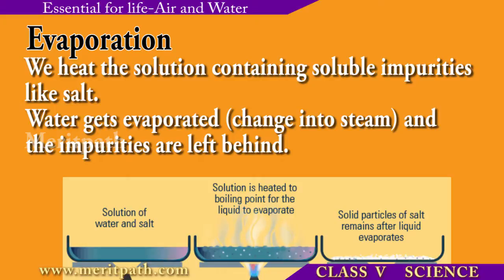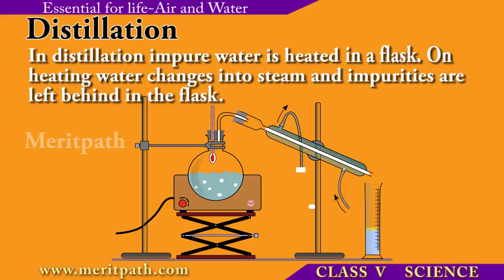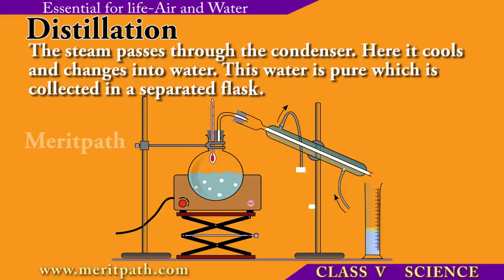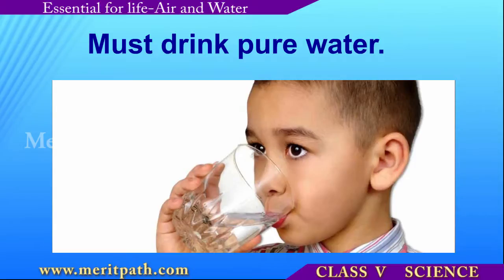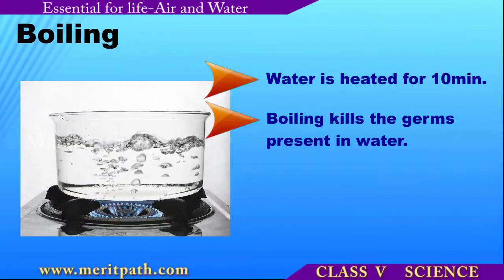In the distillation process, impure water is heated in a flask. On heating, water changes into steam and impurities are left behind in the flask. The steam passes through a condenser where it cools and turns into pure water, which is collected in a separate flask. We can also purify water by boiling for some minutes in order to kill the germs present in it.